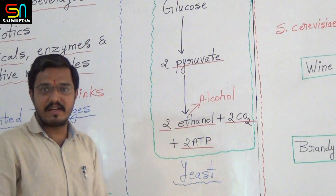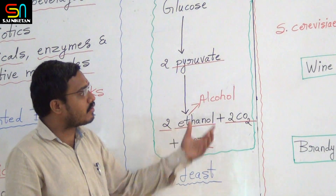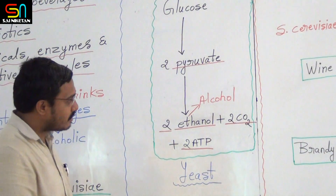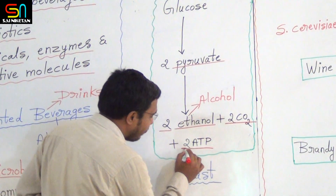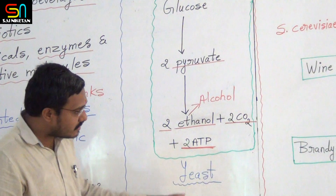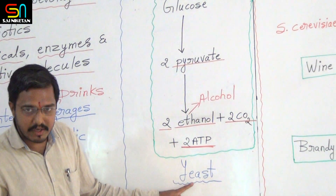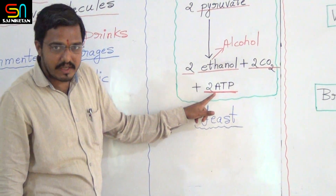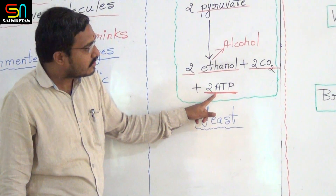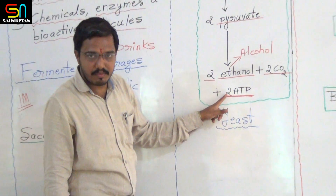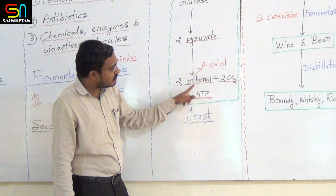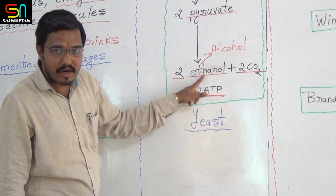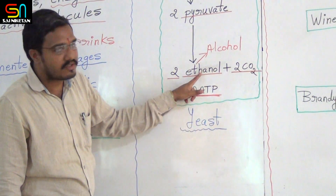Fermentation takes place in yeast not only to produce alcohol — actually, fermentation takes place in yeast to get ATP, to get energy. Yeast does this process, and during this process there is production of ethanol. Human beings started to use this yeast in a commercial way.